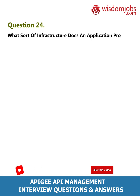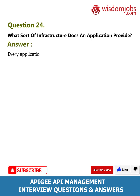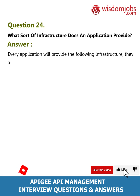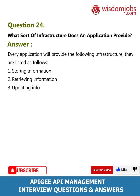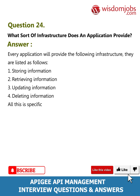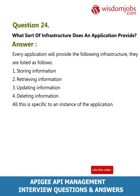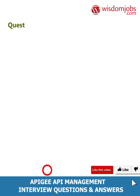Question 24: What sort of infrastructure does an application provide? Answer: Every application provides the following infrastructure: one, storing information; two, retrieving information; three, updating information; four, deleting information. All of this is specific to an instance of the application.